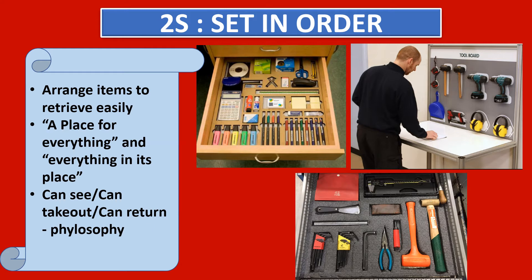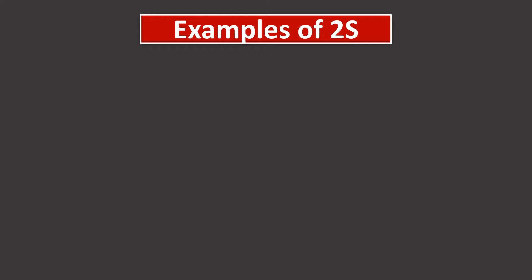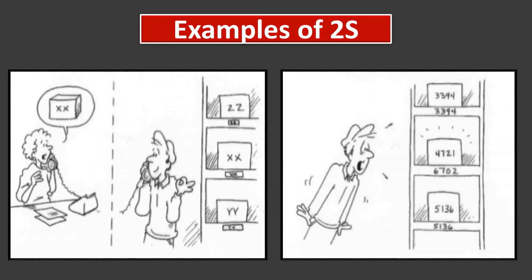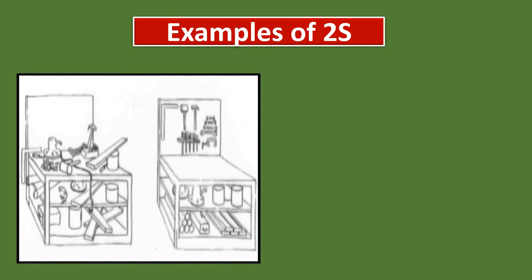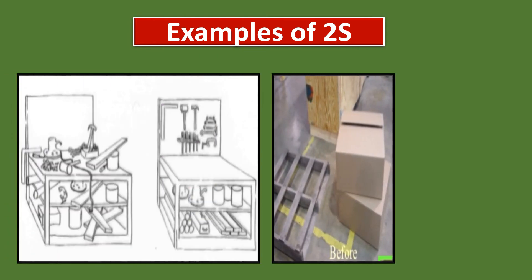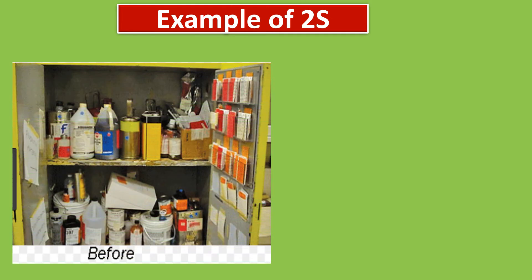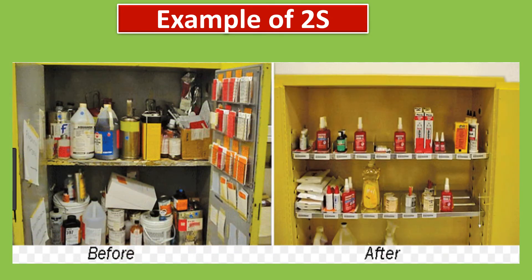Here you can see a maintenance shadow board where all maintenance tools are kept. Let us see some examples of 2S. A customer is asking for item XX; the storekeeper finds the same item is available in the store and immediately responds to the customer. Another example: a storekeeper found a box kept on the rack where the item number on the rack and the item number on the box are different, so he immediately took action. You can see two benches — one is very haphazard, another is properly managed. There is also a photo where pallets are kept in a haphazard way and the after photograph shows them properly managed. An almirah that was haphazard is now properly identified and managed.